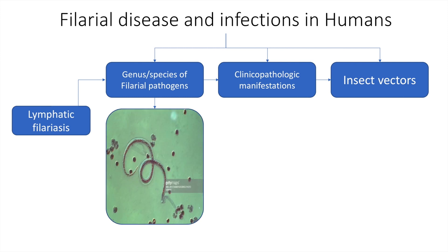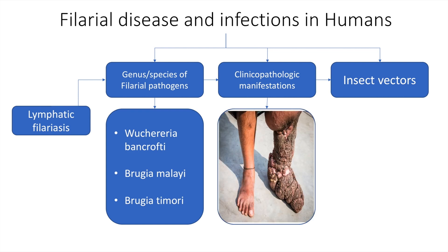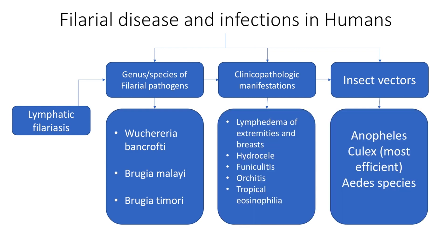This is what Wuchereria bancrofti looks like. The clinico-pathologic manifestations are lymphedema of extremities, breasts, hydrocele, funiculitis, orchitis, and tropical eosinophilia. This is what lymphedema of the extremity looks like. The insect vectors are Anopheles, Culex — which is the most efficient vector for filariasis — and the Aedes species.